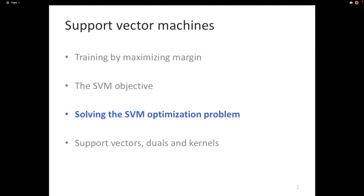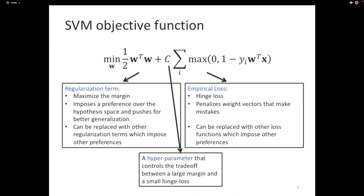We've already looked at this idea that it's a good idea to maximize the margin while training, and we've seen the SVM objective function. Now we're going to look at how to solve the SVM optimization problem. Because of time constraints, we won't be looking at support vectors in dual, so if you're interested, the materials are on the class website. We've seen this objective function and our goal is to now focus on how this gets solved, how the minimization gets solved.